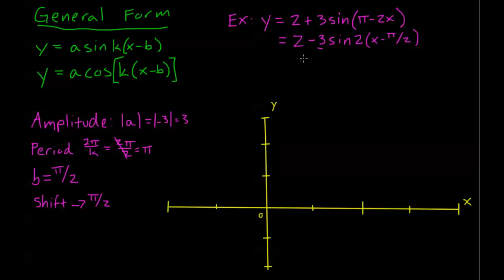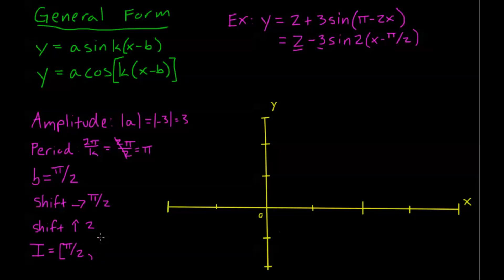And I have another shift — my vertical shift, shift in y, of positive 2 as well. So I'm shifting up by 2. You'll sometimes be asked to document what the interval is of one period. I'm going to denote that interval by i. Our interval after horizontal shifts is going to be from b to b plus 2 pi over k, or b plus my period. So that's going to be from pi over 2 to 3 pi over 2.